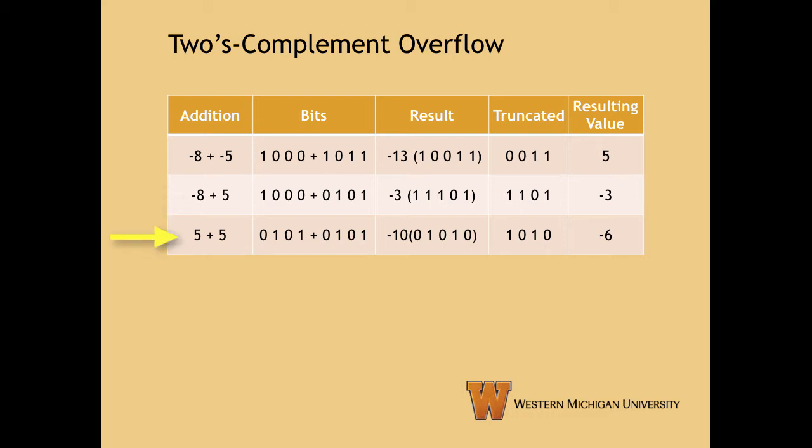Finally, row three shows us an example of two positive numbers adding to a negative number because of the overflow. The carry bit is a zero, but dropping it means that our most significant bit ends up being a one, resulting in a negative answer to adding two positive numbers.